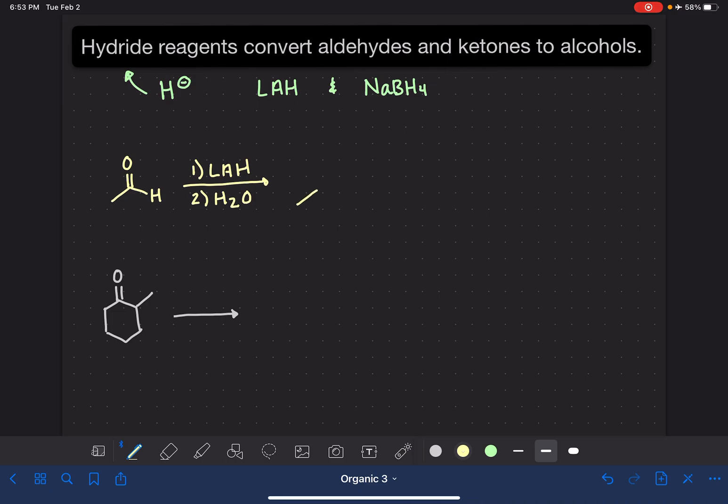In this reaction, the hydride reagent, the H- ion, adds to the carbon of the carbon-oxygen double bond. This converts the carbon-oxygen double bond to a single bond. In step two, when we add water, that places a second hydrogen atom on the oxygen. This line structure version is a better representation of the product.